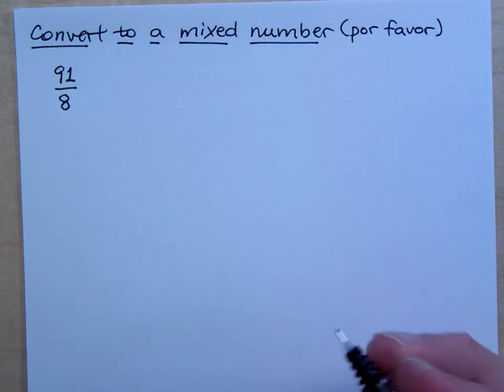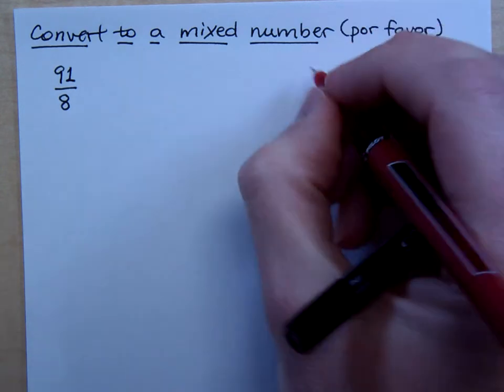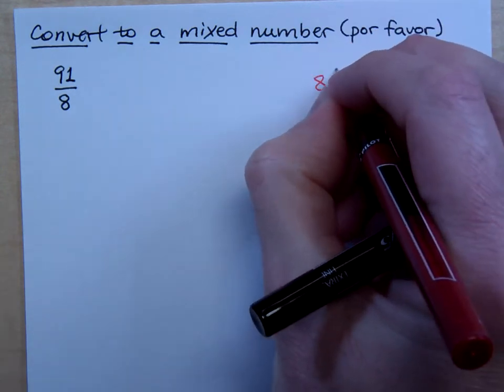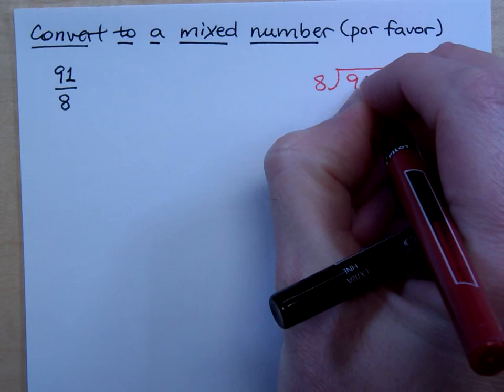I divide, right? So maybe off to the side, I'm going to do long division. So 8 goes into 91. Let's figure this out.